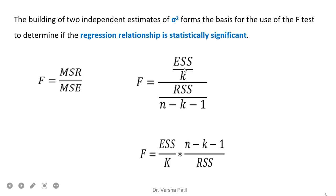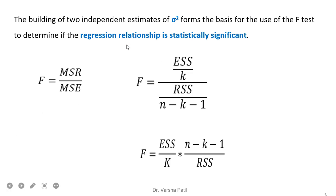The two estimates of sigma square are MSR (mean square due to regression) and MSE (mean square error). Mean square due to regression is ESS divided by k, and mean square error is RSS divided by n minus k minus 1. ESS is the difference between the predicted value and the average, squared and summed. RSS is the residual sum of squares — the difference between the actual value and predicted value, squared and summed. Here k is the number of independent variables and n minus k minus 1 is the degree of freedom.